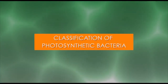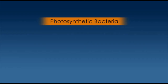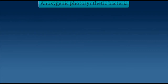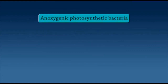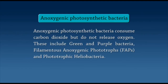Classification of photosynthetic bacteria. Photosynthetic bacteria are classified into two: one, anoxygenic photosynthetic bacteria, and two, oxygenic photosynthetic bacteria. Anoxygenic photosynthetic bacteria consume carbon dioxide but do not release oxygen. These include green and purple bacteria, filamentous anoxygenic phototropes or FAPs, and phototrophic heliobacteria.